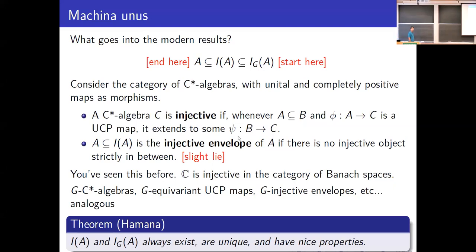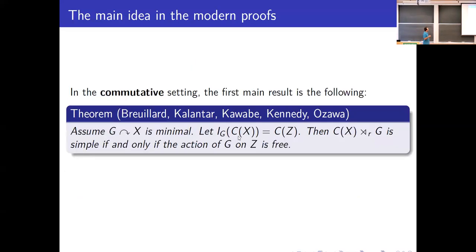Hamana did a bunch of work on these objects in the late 70s and early 80s, showing that they always exist (though they're axiom of choice constructions), they're very unique, and they have very nice properties such as rigidity, essentiality, monotone completeness, and so on.